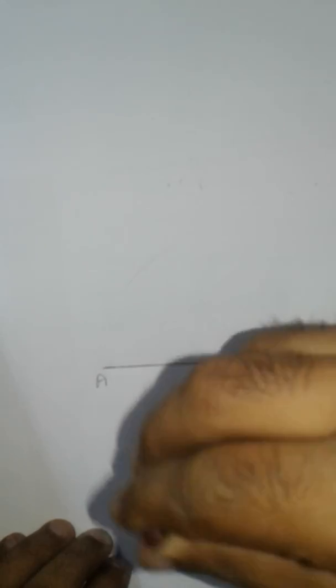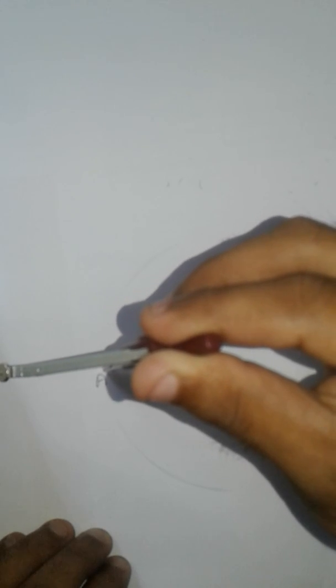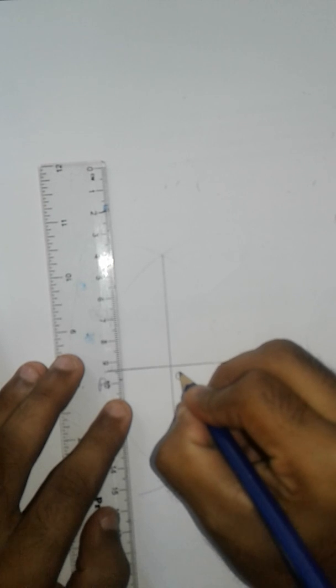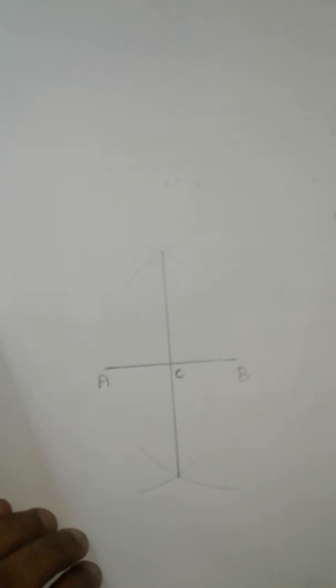Firstly, we start the construction of a bisector on a given line to locate point C. This point is C. Next, we draw the perpendicular line AB on point AB.